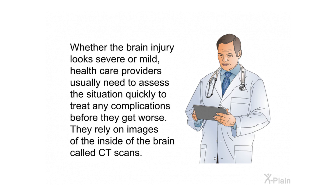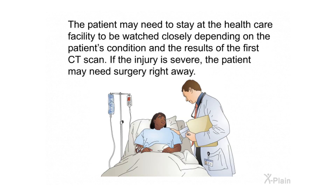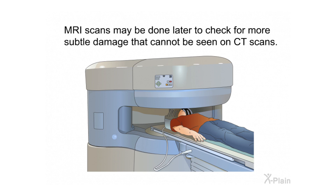Diagnosis. Whether the brain injury looks severe or mild, healthcare providers usually need to assess the situation quickly to treat any complications before they worsen. CT scans of the brain may be done to check for skull fractures and any blood clots or bruising in or around the brain. The patient may need to stay at the healthcare facility to be watched closely. If the injury is severe, the patient may need surgery right away. MRI scans may be done later to check for more subtle damage not visible on CT scans.